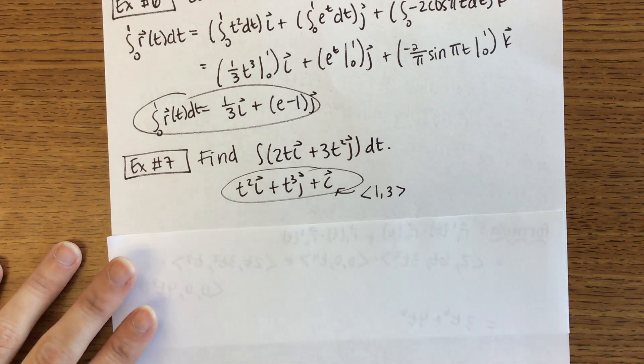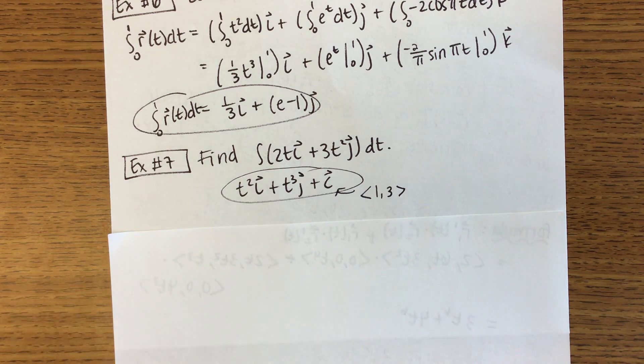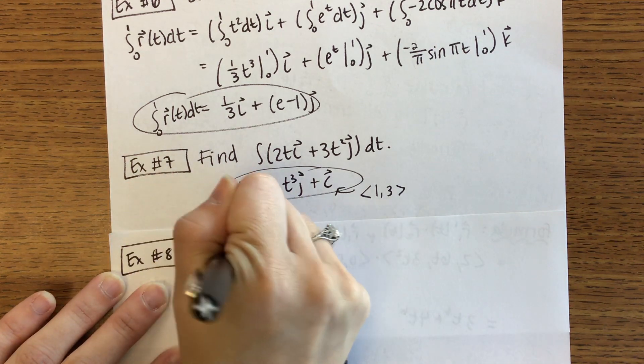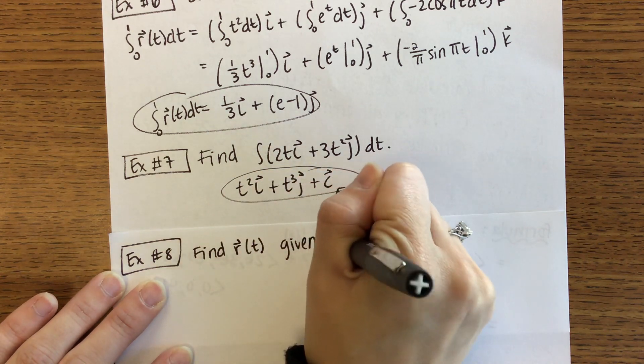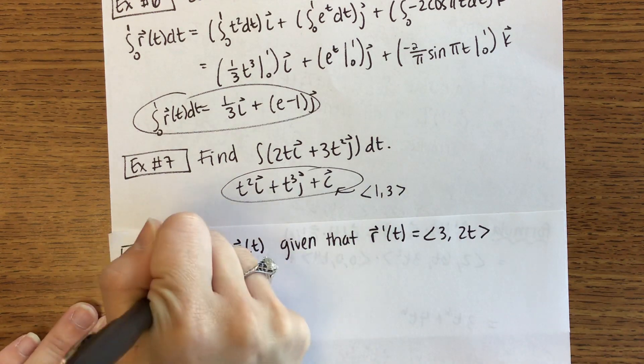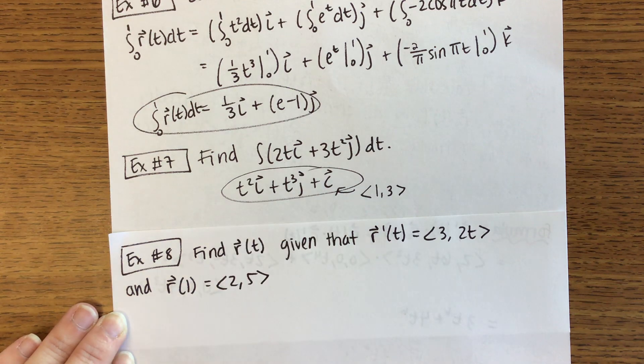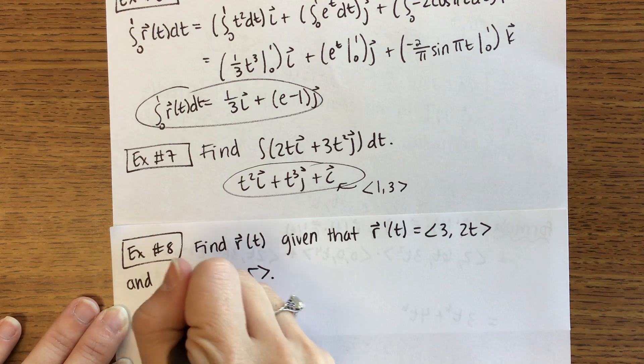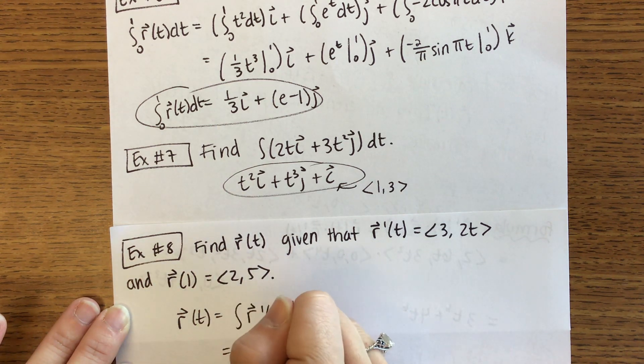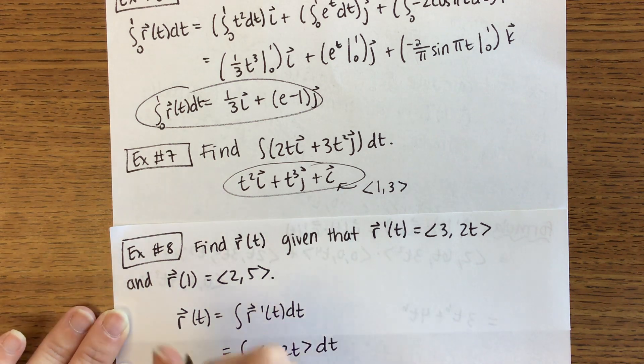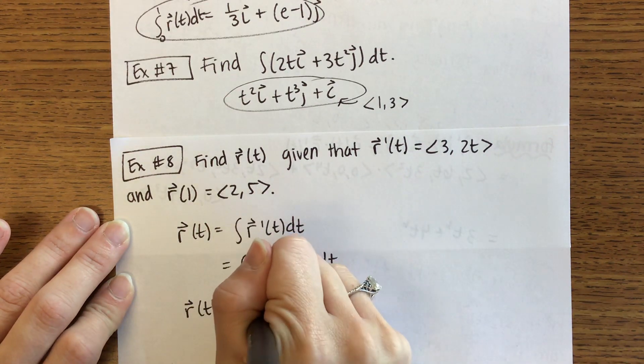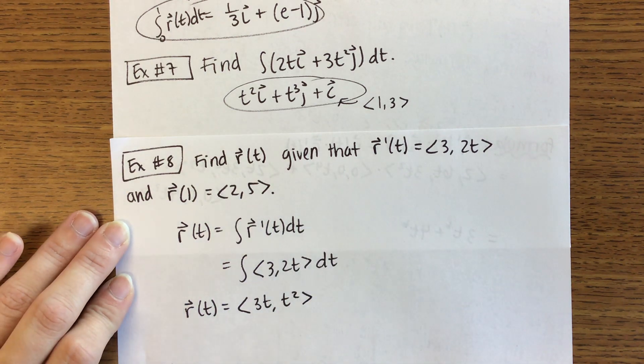Those two examples covered the first one definite integrals, the second one indefinite integrals. And then we have one last example to do. Example 8. We are going to find r(t), given that r'(t) is equal to <3, 2t>, and r(1) is the vector <2, 5>. So our r(t), this is going to be the integral of r'(t). So we are integrating that <3, 2t>. So our r(t) then, integrating 3, I get 3t. Integrating 2t, I get t². Then we talked about above, you need that plus c as well.